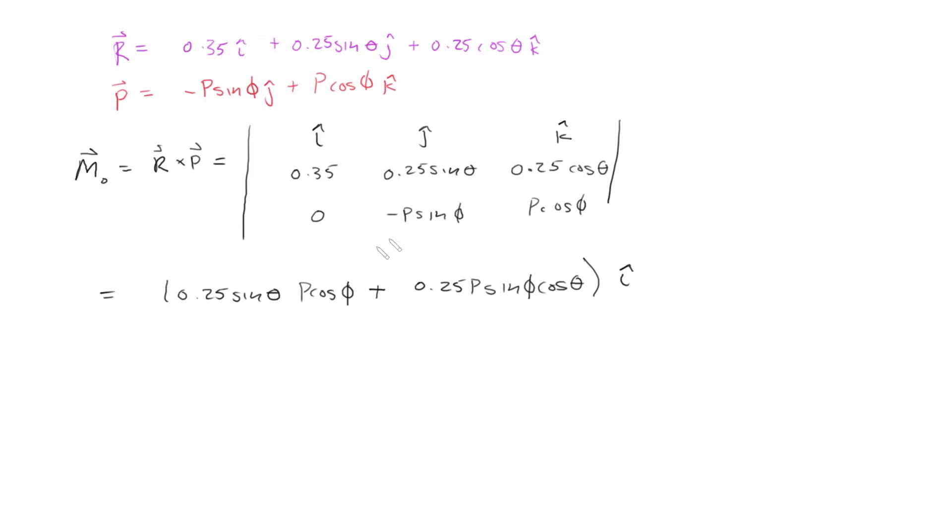And then for the j component, we cover up the j column to perform the 2 by 2 determinant. So that would be 0.35 P cosine phi, and then minus 0, so that's that. Since this is the j column, we include a negative.